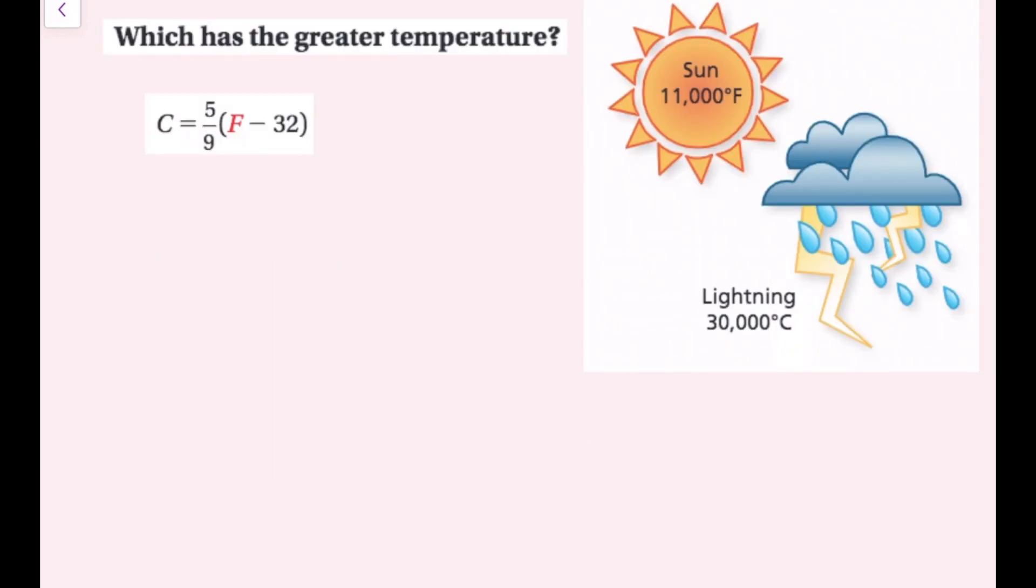So we want to figure out what is the greater temperature here. We have the sun at 11,000 degrees Fahrenheit, and then we have lightning at 30,000 degrees Celsius. So I've included the formula here. And to be honest, it does not matter what formula you use. You can either use this one or the one that we just solved for in the last example, as long as we convert them to the same temperature unit here. In this case, what I'm going to do is I'm going to convert this 11,000 degrees Fahrenheit into Celsius. Because this equation is telling me what the degrees Celsius are. So I'm going to rewrite this as C equals five-ninths times 11,000 minus 32.